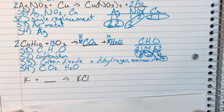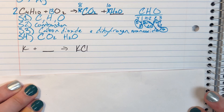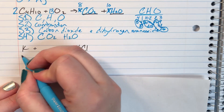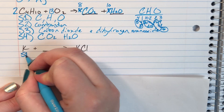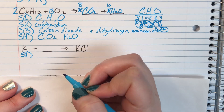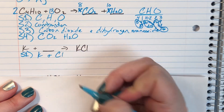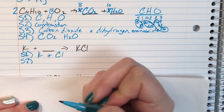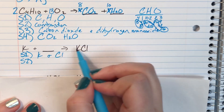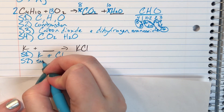The next problem: K plus something goes to KCl. Step one — looking at the product side where everyone is present, I see potassium and chlorine. Step two — I have potassium plus something going to one single product. This looks like a synthesis reaction.